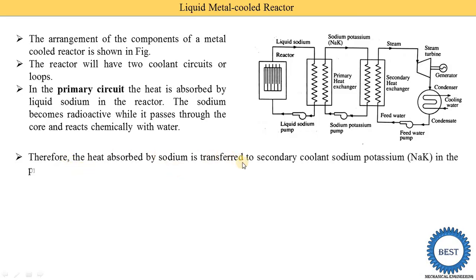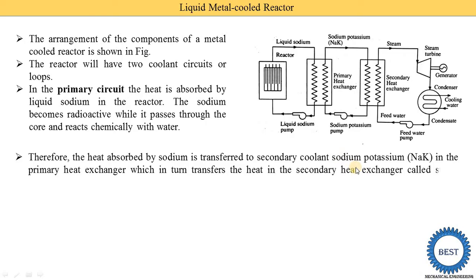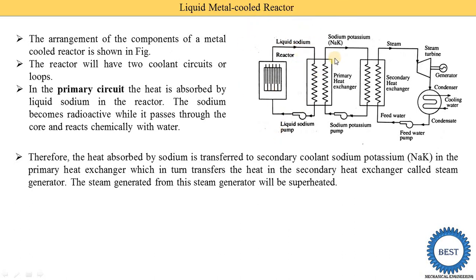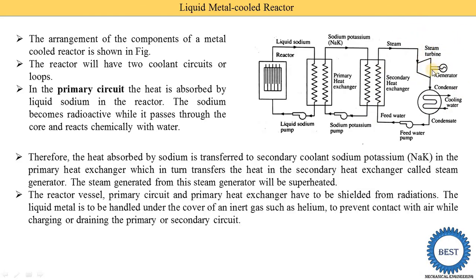The heat absorbed by sodium is transferred to the secondary coolant, sodium-potassium, in the primary heat exchanger. The sodium-potassium then supplies heat to the secondary heat exchanger, where it converts water into superheated steam. This steam drives the steam turbine to produce mechanical energy, which powers the generator. After condensation, the water is fed back through the feed water pump to the secondary heat exchanger, completing the cycle.